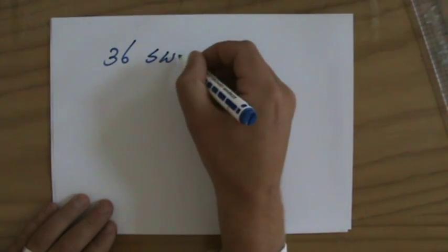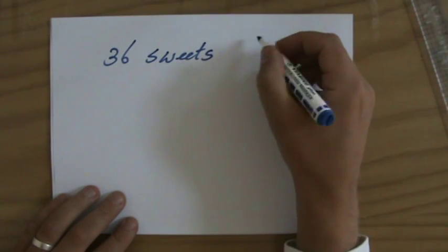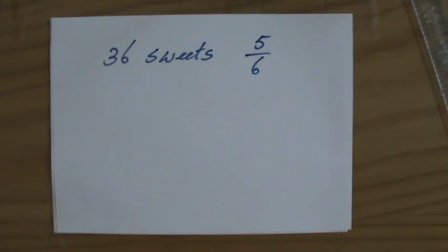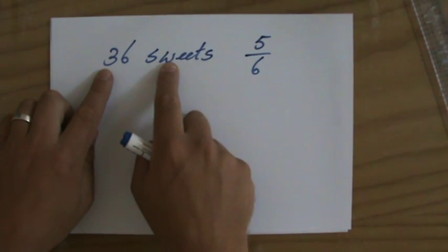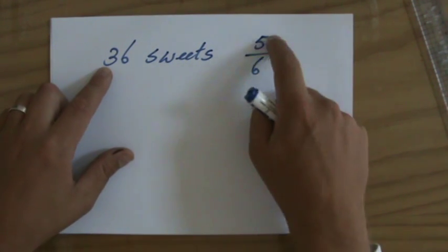36 sweets. But I'm pretty hungry. I'm going to eat 5/6 of them. How many sweets do I eat? Well, 36 sweets, I divide that into 6 equal portions, and I take 5 of them.